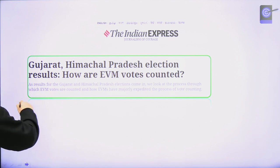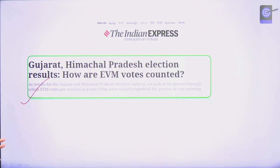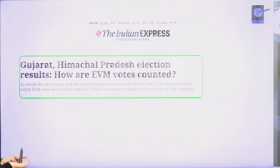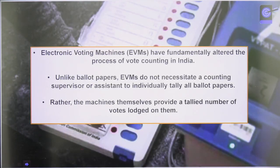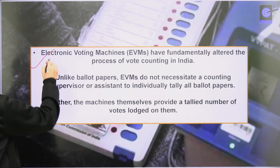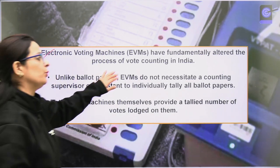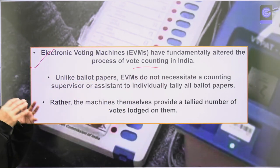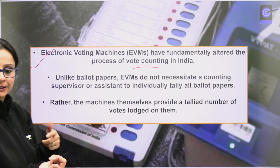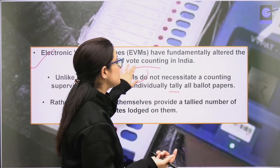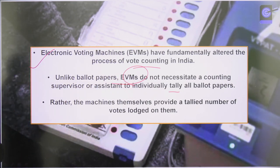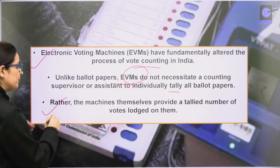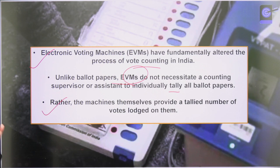Gujarat and Himachal Pradesh's election results have come. How does EVM counting actually happen? After this session, you will never doubt this. EVMs fundamentally altered the whole process of vote counting in India. What was happening with ballot papers? There was an assistant or a supervisor who would open and tally the ballot papers. In EVMs, there is no need for any supervisor. The machine itself provides a tallied number of votes lodged on it.